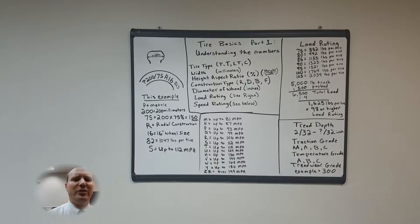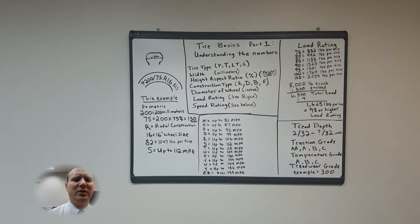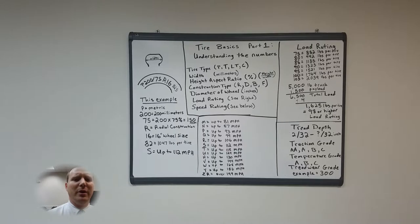The diameter of the wheel is the next number measured in inches. After that is your load rating and your speed rating.